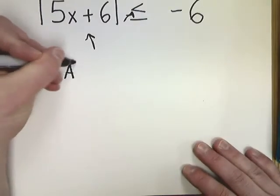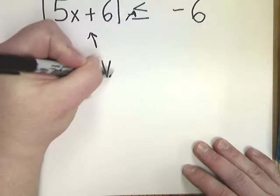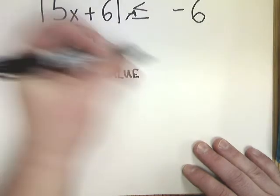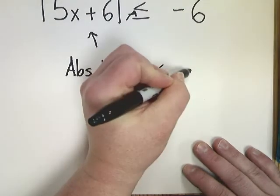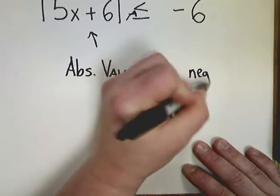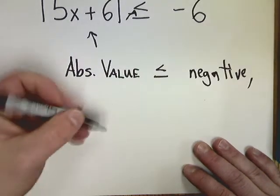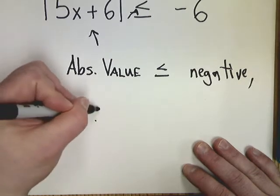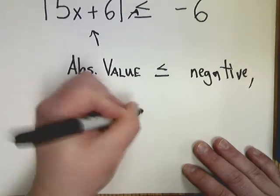This statement says that this absolute value is somehow less than a negative. Well, a positive is never less than a negative. So, if the absolute value is less than or equal to a negative, you're always going to get no solution.